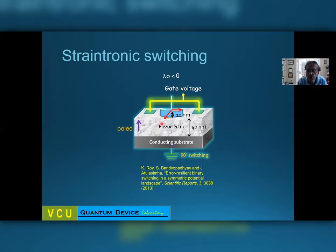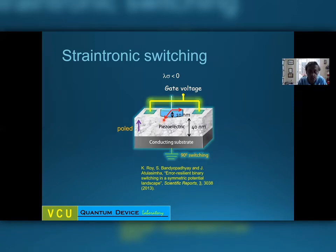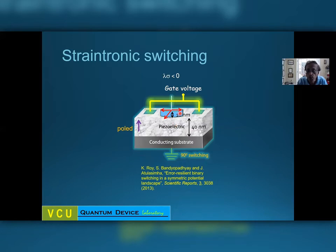Then if you withdraw the stress as soon as the 90-degree rotation is completed, there is an inertial torque that acts on the magnetization that will make it rotate by an additional 90 degrees and make it flip. So you do a 180-degree rotation, but you have to pulse the stress correctly. If you overshoot or undershoot, it will not work — your stress pulse has to be timed correctly.